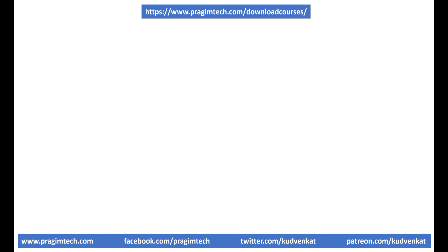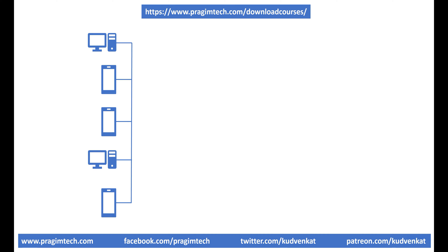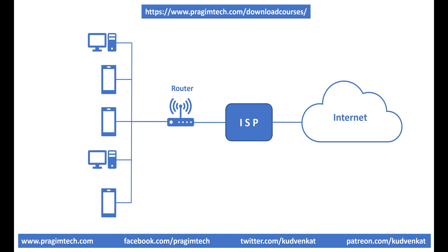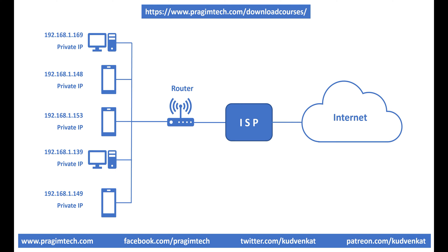Let's say in your home you have two computers and three mobile phones, all connected to the same network. The router you use to connect to the internet assigns a private IP address to each device on your home network. The router itself gets a public IP address assigned to it from the internet service provider, like BT (British Telecom) or Virgin Media in the UK, or Comcast in the United States. The key point is: it is the ISP that assigns a public IP address to your router, and it is the router that assigns private IP addresses to all devices on your home or office network.